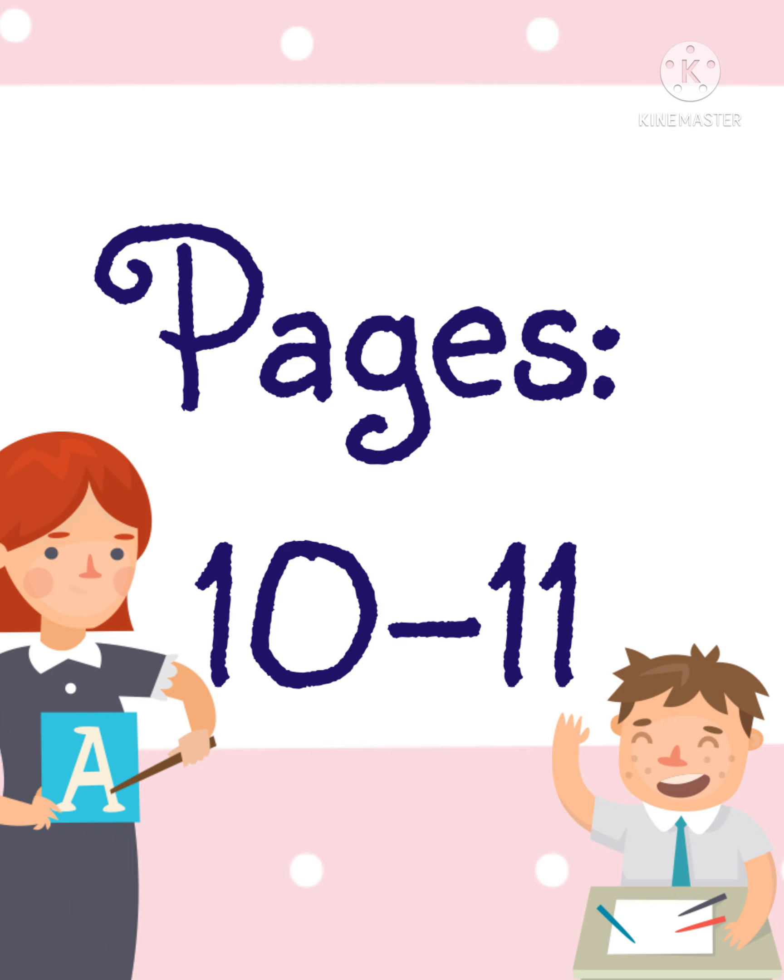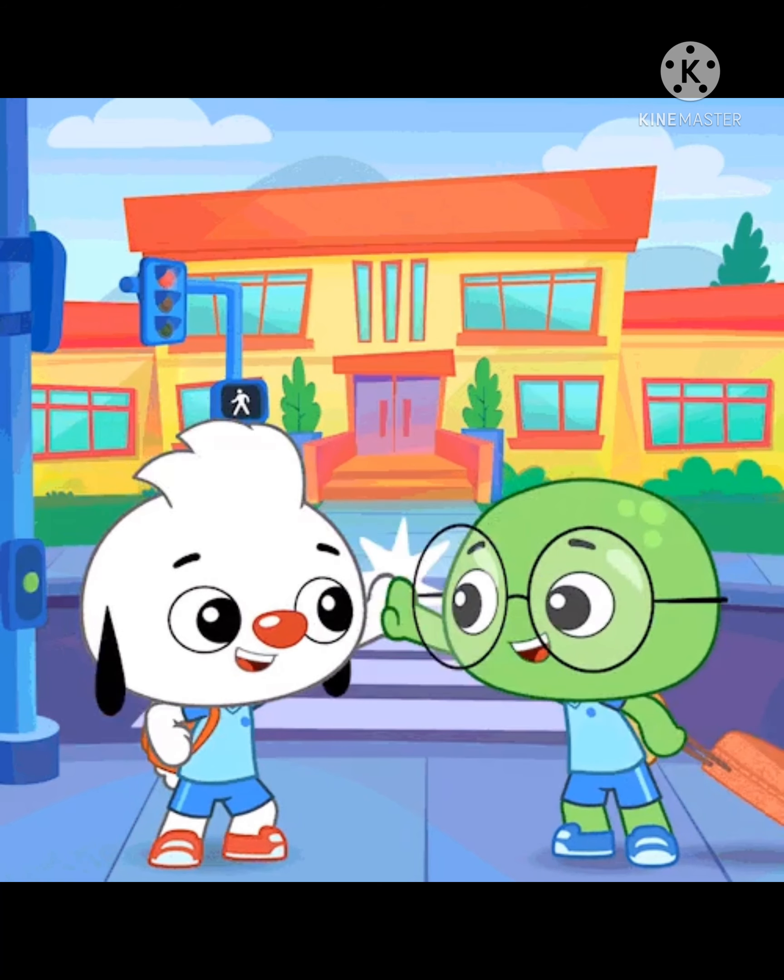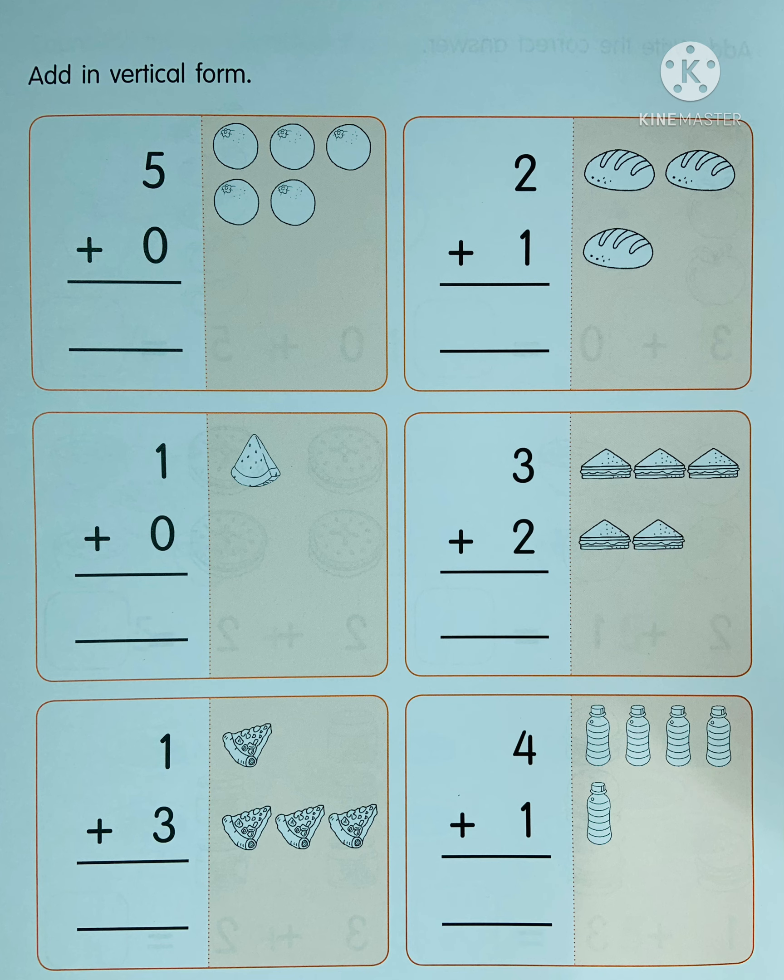Let's have a quick review on your addition lesson. Five plus zero equals... okay, let's count all of these oranges. Let's count it one by one: one, two, three, four, five. There are five oranges.